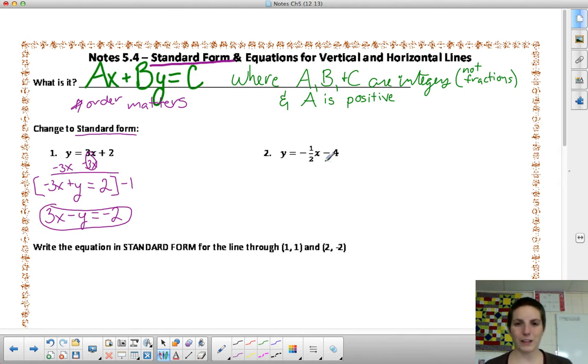Let's do number 2 together. Remember, first step is always order. So, we will add 1/2 x. So, we have 1/2 x. It's positive y. So, plus y equals 0 minus 4 is negative 4. So, we have our proper order. We do not have integers.